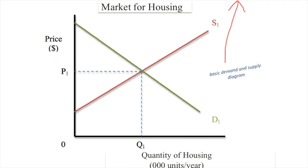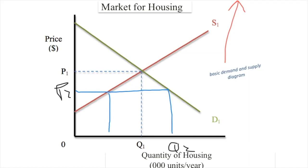So a price ceiling is drawn below the market equilibrium price — always. And that's where we get our P2. Then we have two new important spots: we have created another quantity out here, which we're going to call Q2, and another quantity over here, which we are going to call Q3.